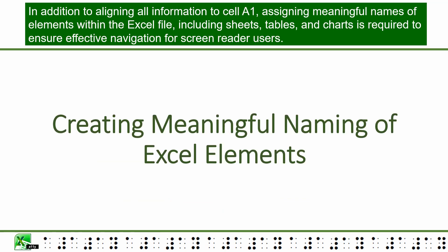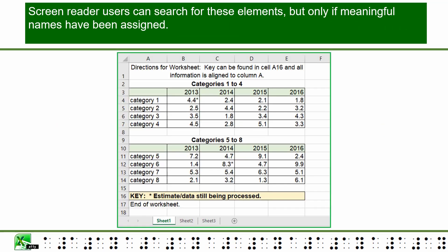In addition to aligning all information to cell A1, assigning meaningful names to elements within the Excel file — including sheets, tables, and charts — is required to ensure effective navigation for screen reader users. Screen reader users can search for these elements, but only if meaningful names have been assigned.